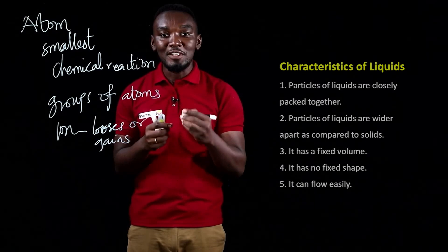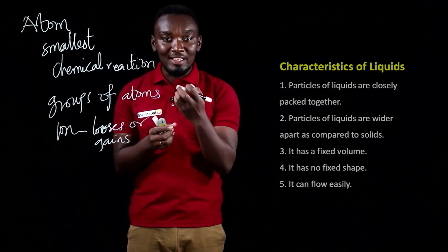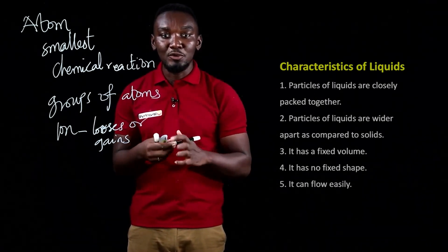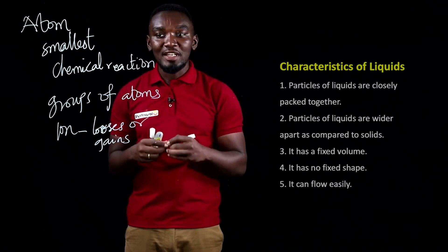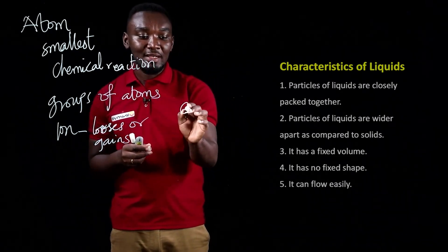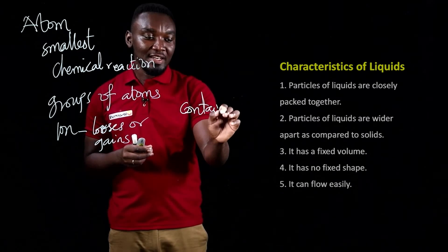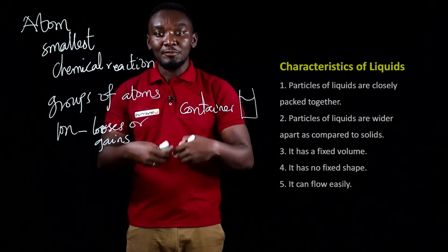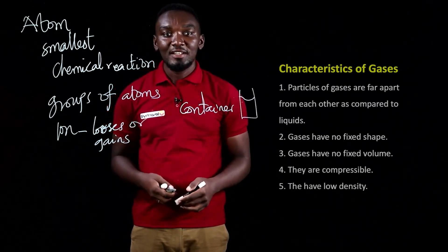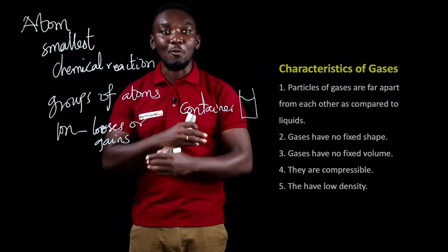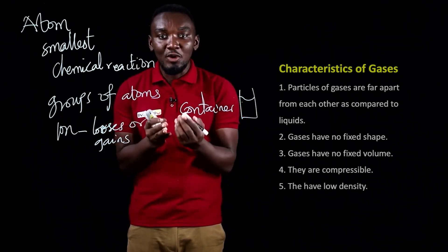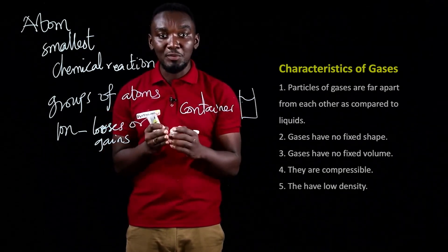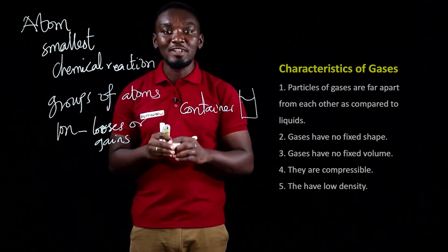Liquids have a fixed volume — that is why you can calculate the volume of water and get a specific known volume. But liquids do not have a fixed shape; they take the shape of the container they are placed in, and they can flow easily. For gases, their particles are wider apart. Gases do not have a fixed shape or fixed volume, they are compressible, and they have very low densities.